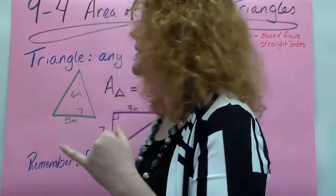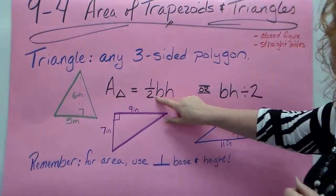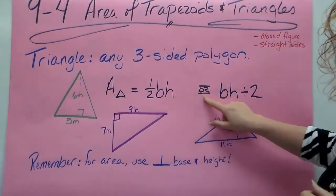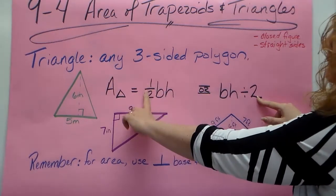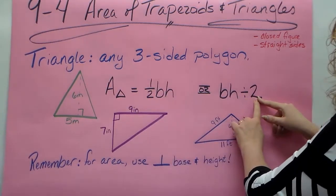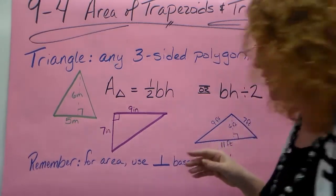Now when you're finding the area of a triangle, the formula is 1/2 base times height or it's base times height divided by 2. These are the same thing - multiplying something by half and dividing it by 2 are doing the same thing to it.